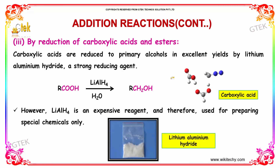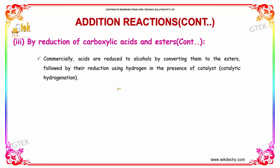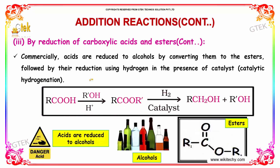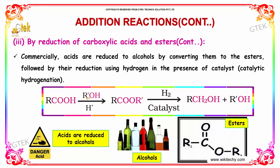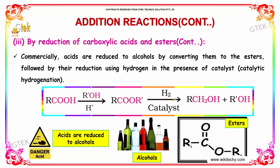The other method is reduction of carboxylic acids and esters. Carboxylic acids are reduced to primary alcohols in excellent yields by lithium aluminium hydride (LiAlH4), which is a strong reducing reagent. RCOOH in the presence of a strong reducing agent and water results in alcohol. However, LiAlH4 is an expensive reagent and is therefore used only for preparing special chemicals. Commercially, acids are reduced to alcohols by converting them to esters first: RCOOH reacts with ROH in the presence of H+ to give RCOOR', which on hydrogenation in the presence of a catalyst gives alcohol and R'OH.